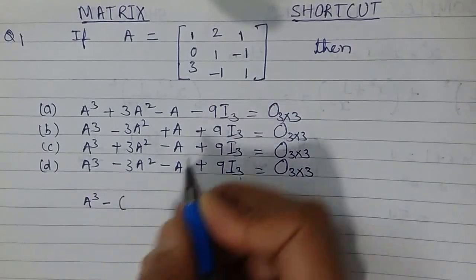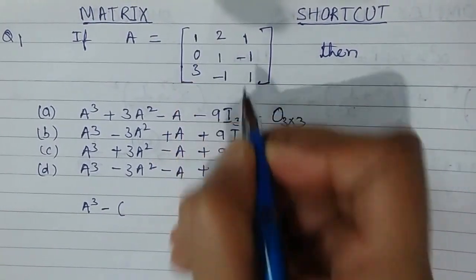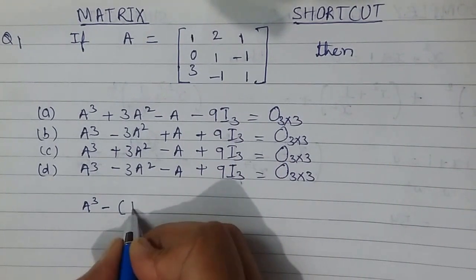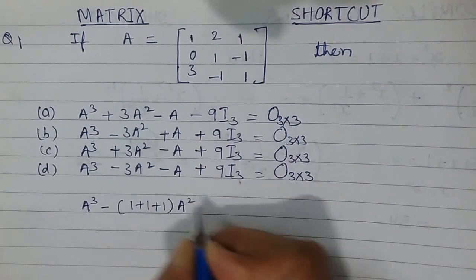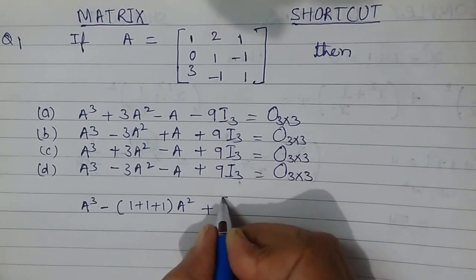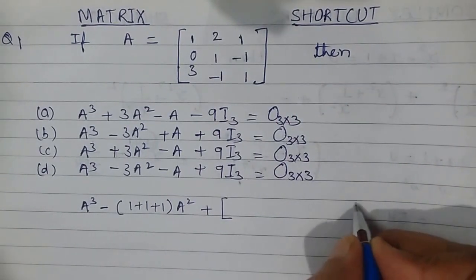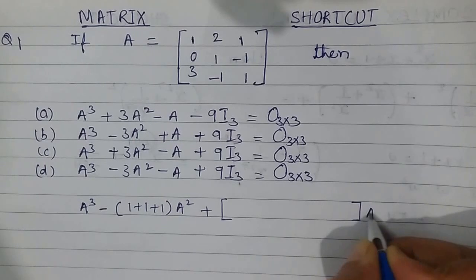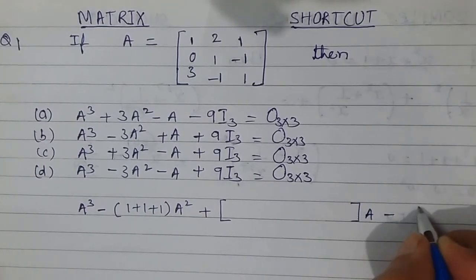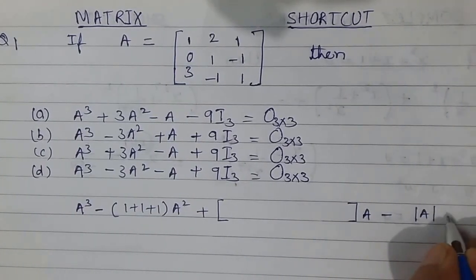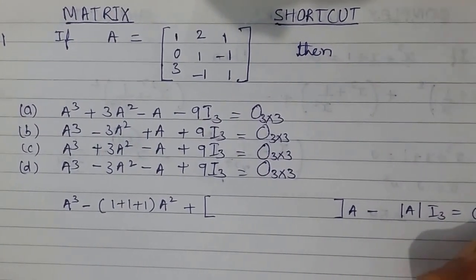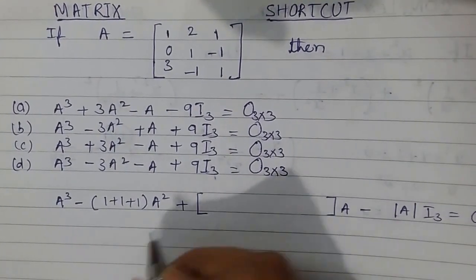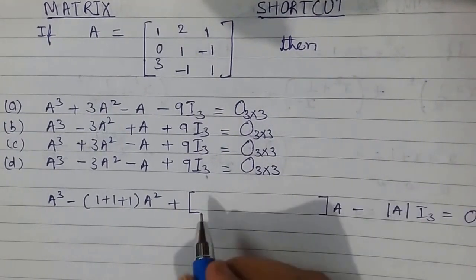Diagonal elements here are 1, 1, and 1, so sum of diagonal elements is 1 plus 1 plus 1 times A². Then positive sign—I will be writing something here—multiplied by A minus determinant of A times I₃ equals 0 for a 3 by 3 matrix. So this we can do directly.